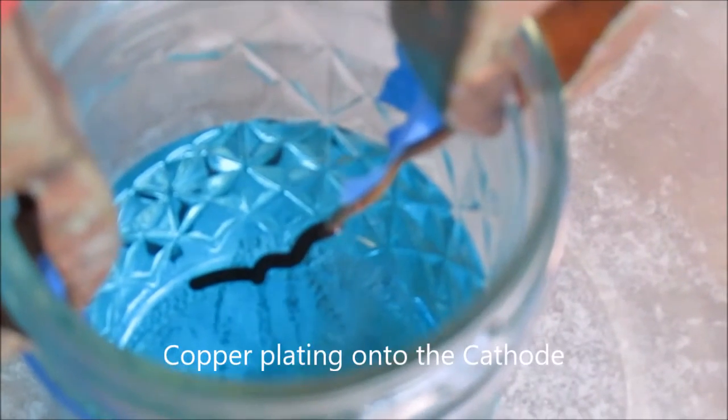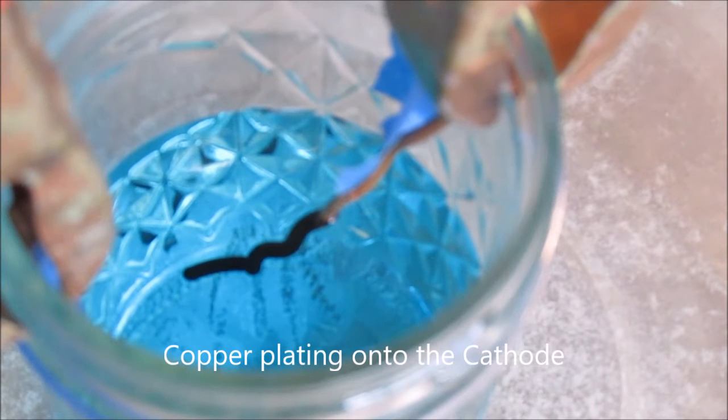So as we can see one of the electrodes is getting very dark. That should be the copper plating out of the solution and in fact it's growing.